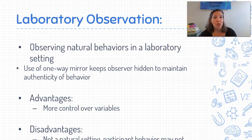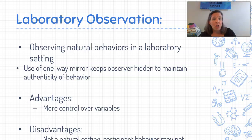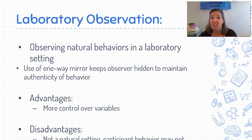The biggest advantage is there's more control over the variables. Remember in naturalistic observation we said it could be raining, so behavior could be different. In a laboratory we can control for those kinds of things. The biggest disadvantage is that it's not natural, so it may not be real. That behavior might be different because they are aware they're being observed, or they feel uncomfortable or nervous because they're in a laboratory and not their natural environment.